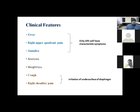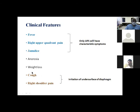Clinical features include fever, right upper quadrant pain, and jaundice — but only 10% will have all three characteristic symptoms together. Jaundice is a delayed complication. Anorexia and weight loss are also present. Cough and right shoulder pain can occur due to irritation of the under-surface of the diaphragm, sympathetic pleural effusion impairing lung mobility, or rupture of a subdiaphragmatic abscess into the pleural cavity or bronchopulmonary tree — causing the patient to cough out pus.